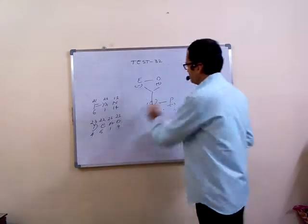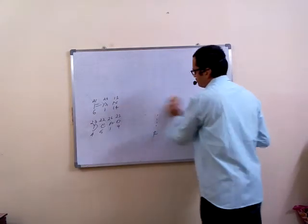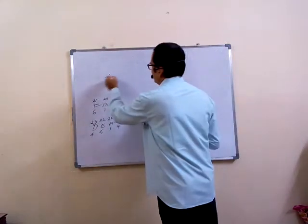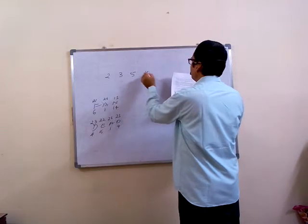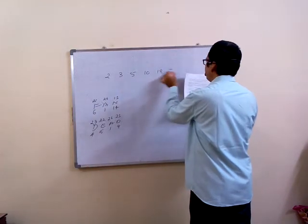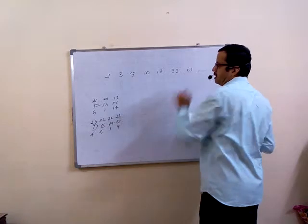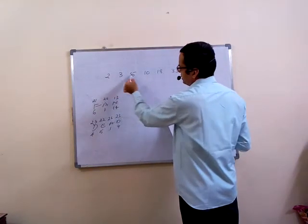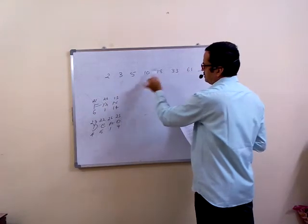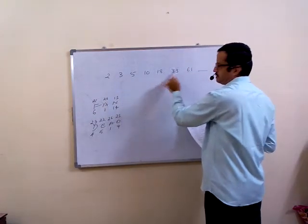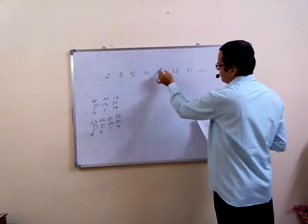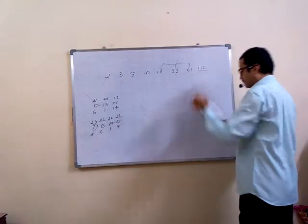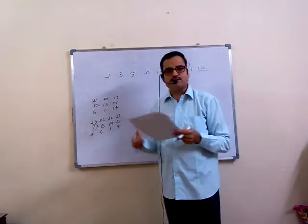Now see sixth question, that is based on number series. The numbers are 2, 3, 5, 10, 18, 33, 61. They have added the previous 3 numbers. 2 plus 3 plus 5 equals 10. 3 plus 5 plus 10 equals 18. 5 plus 10 plus 18 equals 33. In the same way, 60 plus 30 equals 90, 100, 109 plus 3 equals 112. Answer is sixth question, second option.